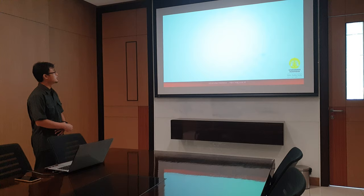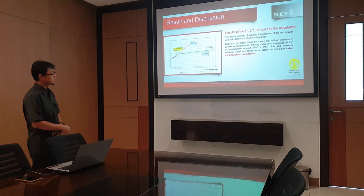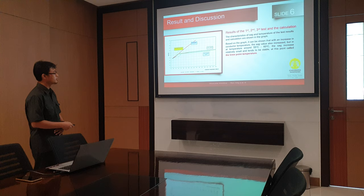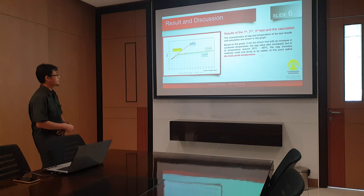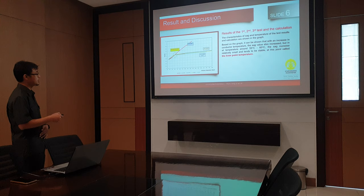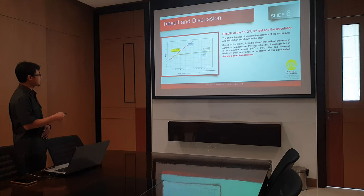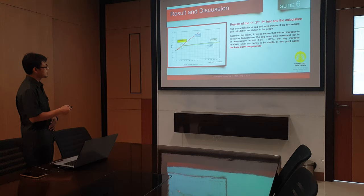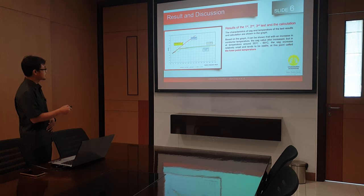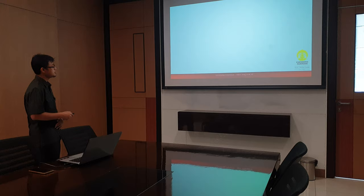From the graph, we will actually know the Knee Point Temperature. Result and discussion. The result of the first, second, and third test and the calculation show the characteristics of the sag and the temperature. Based on the graph, it can be shown that as the conductor temperature increases, the sag value has increased. But in the temperature range around 50–60 degrees Celsius, the sag increase is relatively small, and the trend has changed. This point is known as the Knee Point Temperature.